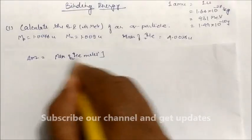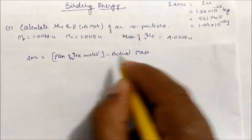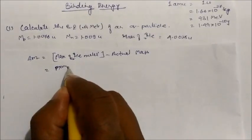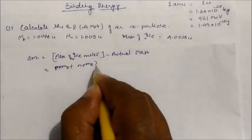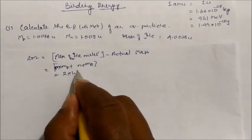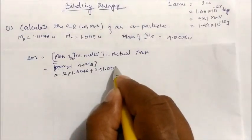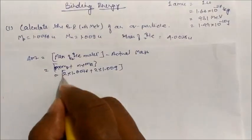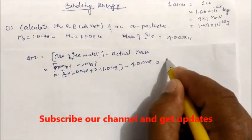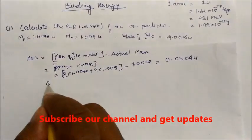Mass defect equals the theoretical mass of the helium nucleus minus the actual mass of the helium atom. So: mass defect = (number of protons × mass of proton) + (number of neutrons × mass of neutron) − actual mass. Substituting: 2 × 1.0076 + 2 × 1.009 − 4.0028 = 0.0304 u.